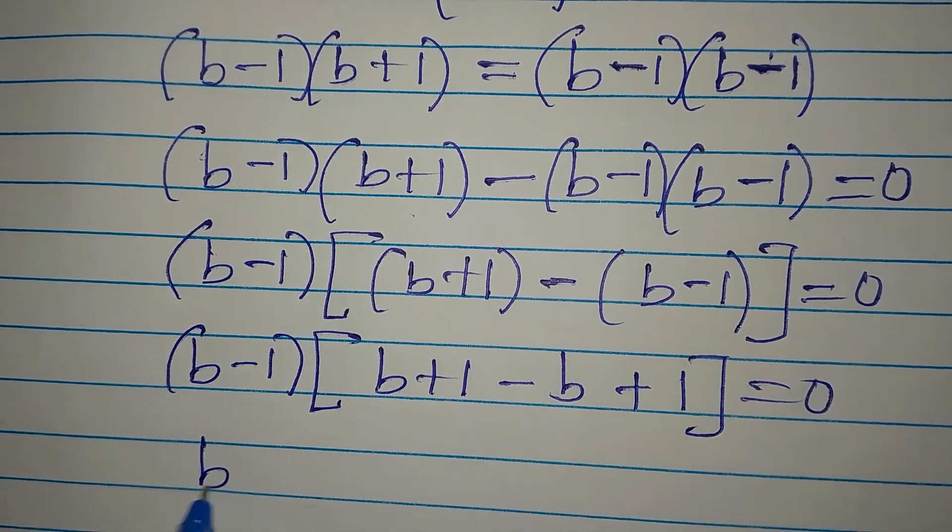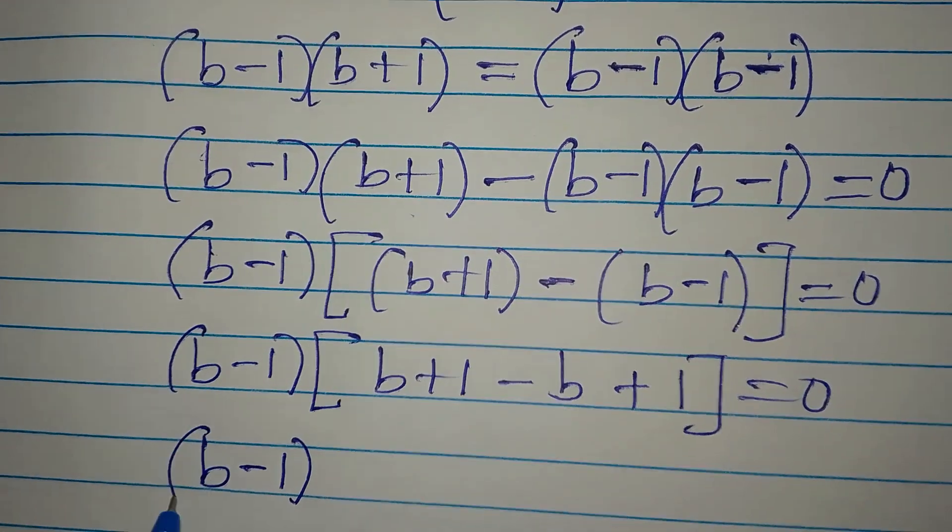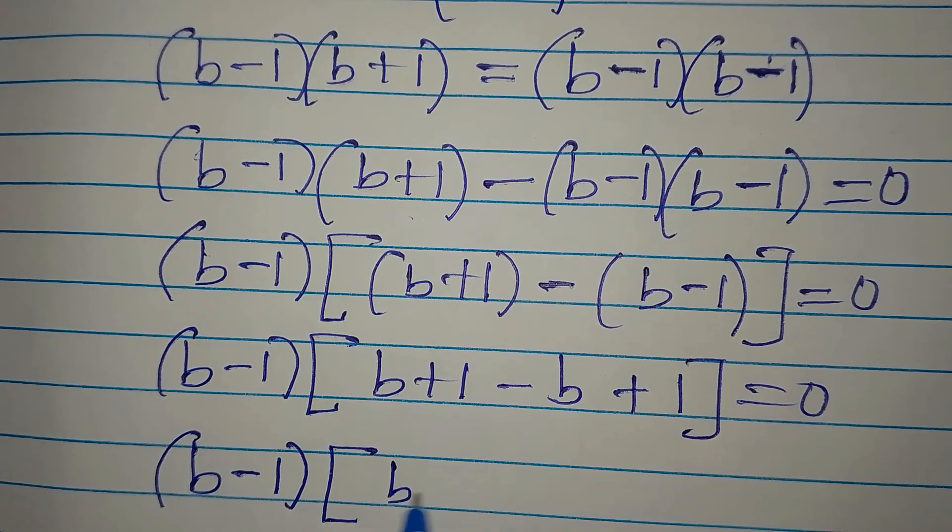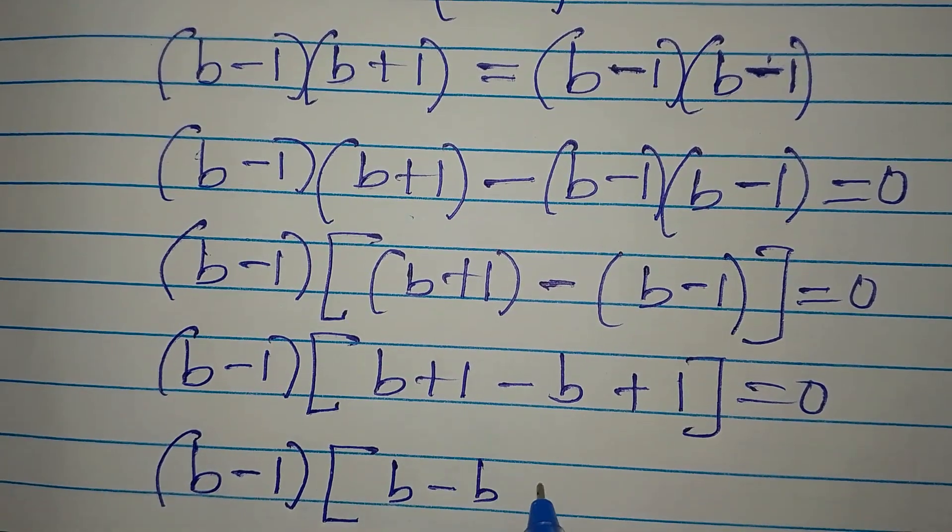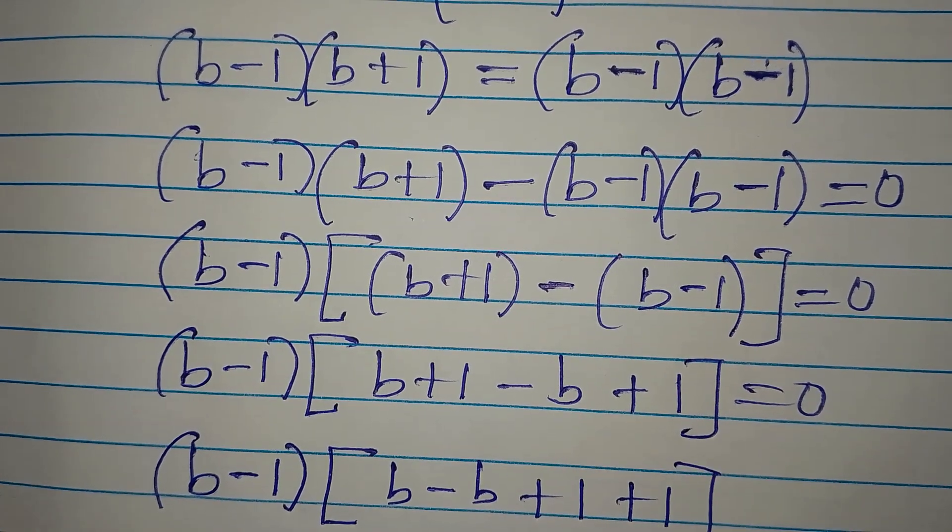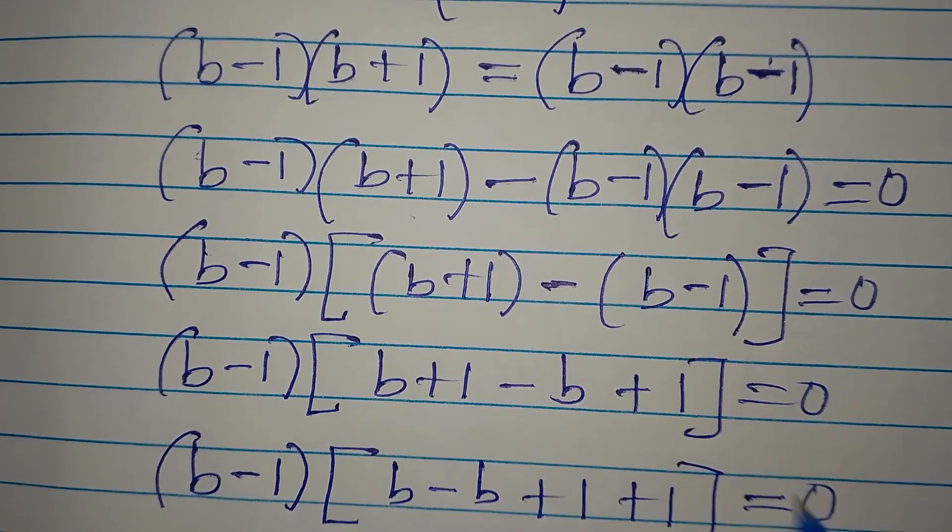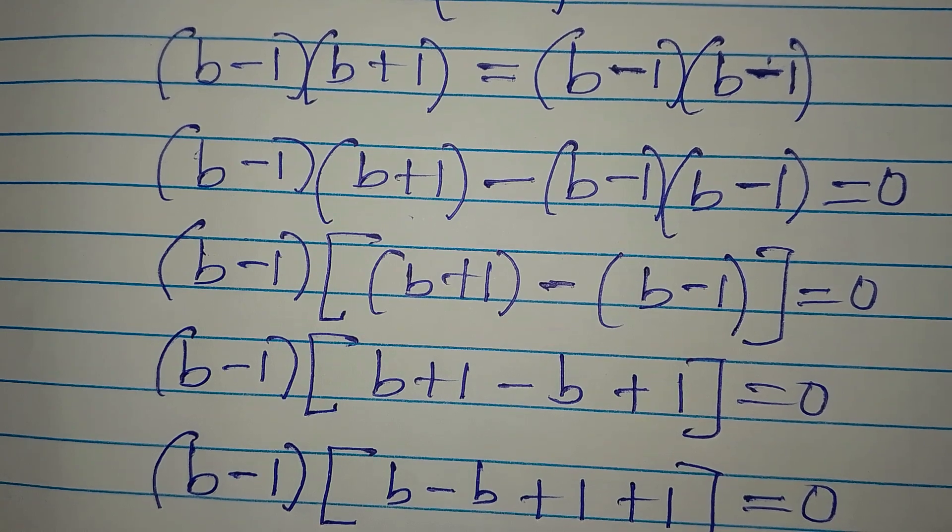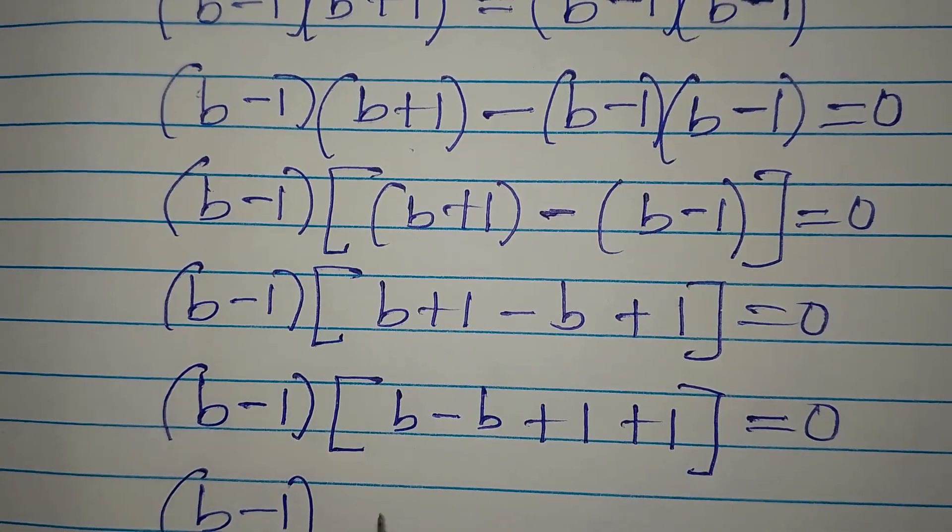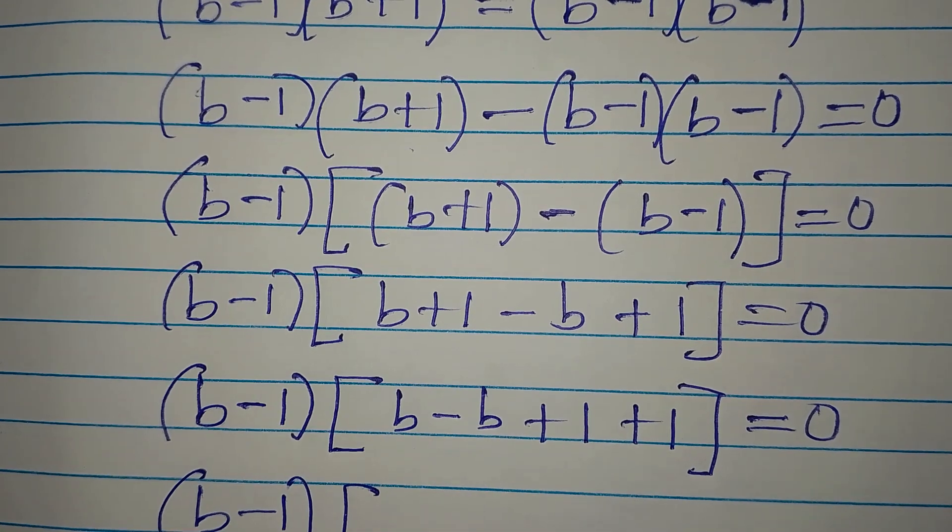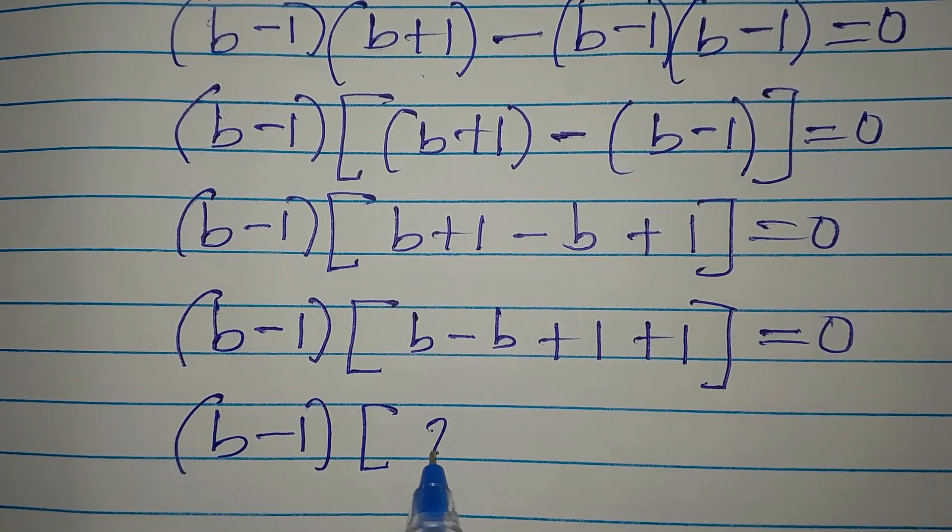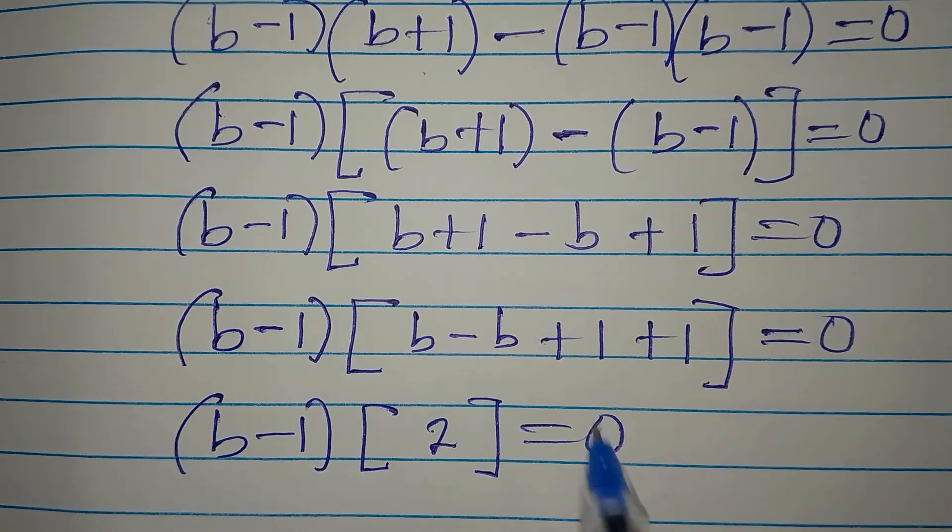Now we have b minus 1. Then we have b minus b. Then this is plus 1, then another plus 1. We close this and equate to 0. Now let's get going. b minus 1 is still a factor. Then here b minus b is gone. Then we have 1 plus 1 which will give 2. Then everything is equal to 0.